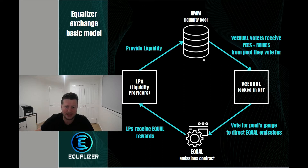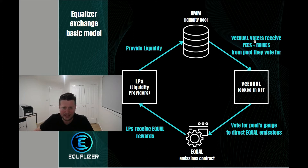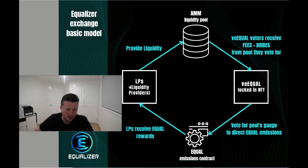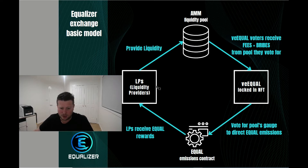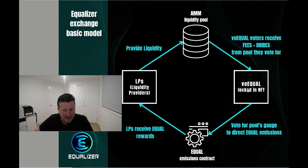So you get this completed loop. Now there's one other thing you have the potential to get here, and that's bribes — where external people would bribe voters to vote for those LPs, and there are reasons beyond this video that people would do that. But effectively the main thing to know is that you're going to get the fees that come through here. That's what makes the VE Equal so valuable.